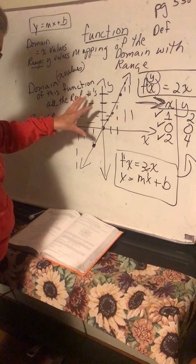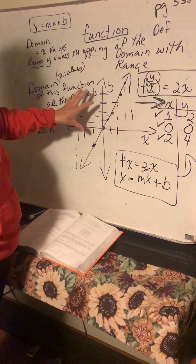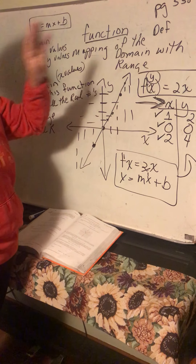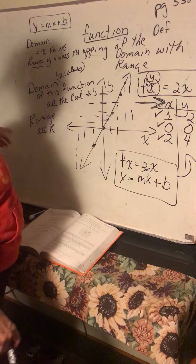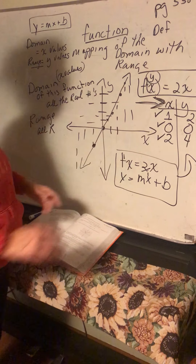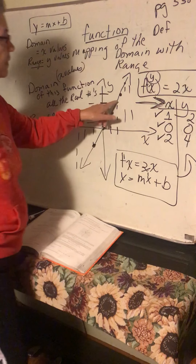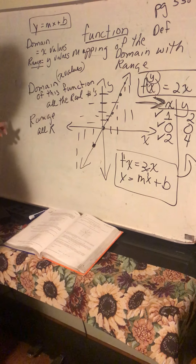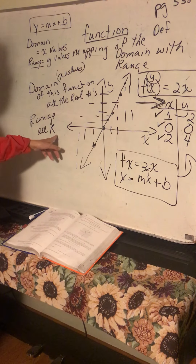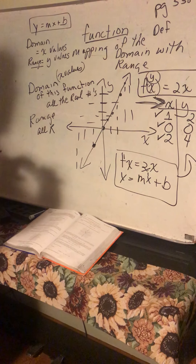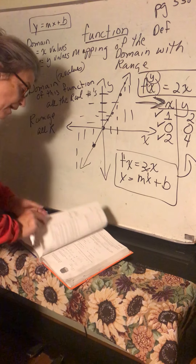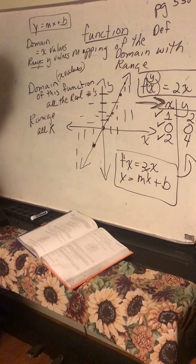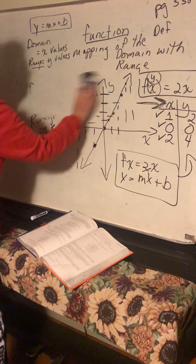When they ask for the domain and range of this graph, your domain is all real numbers because it goes on forever and hits every x value. If it's 1 million out here, this line will eventually hit it. The range values are the same — the line goes up and down forever, so you'll hit them all.